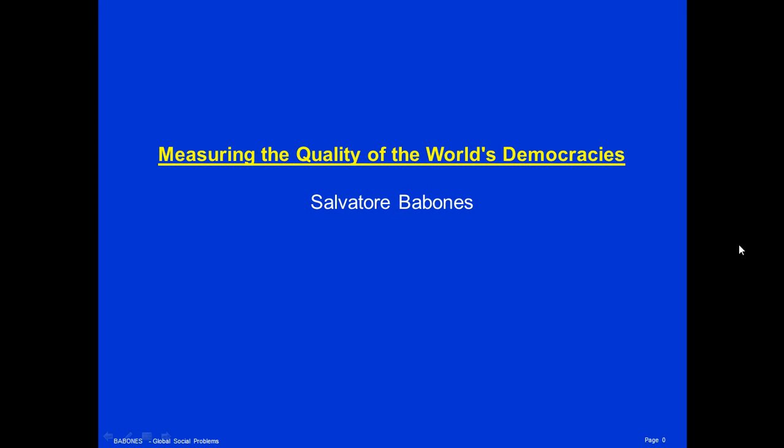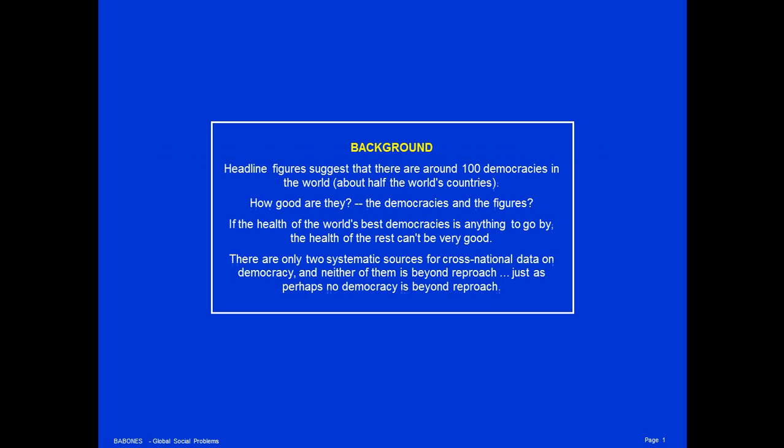I'm Salvatore Bobonis, and today's lecture is Measuring the Quality of the World's Democracies. Headline figures suggest that there are around 100 democracies in the world, or about half the world's countries. But how good are they?